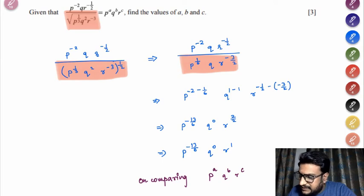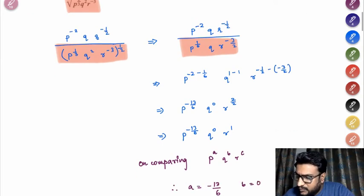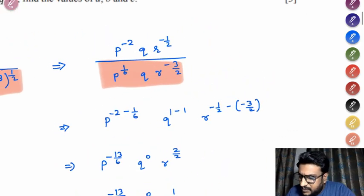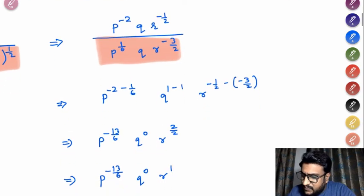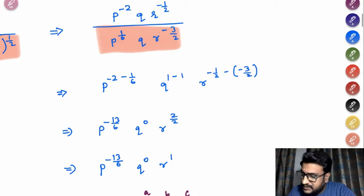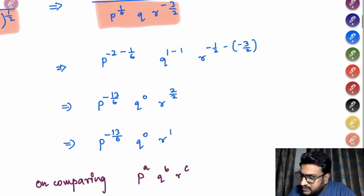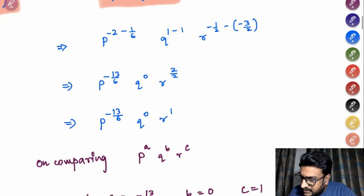Now we have distributed this power half in the denominator to each and every element in the denominator and the numerator remains as it is. Now if you look at both at the denominator and numerator, P and P both base is same and they are in division, so powers would subtract. So it's -2 minus 1/6. Similarly Q power 1 minus 1, it's -1/2 minus -3/2. So once you simplify and solve, you'll get your final answer as this.